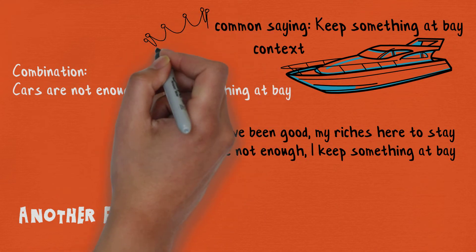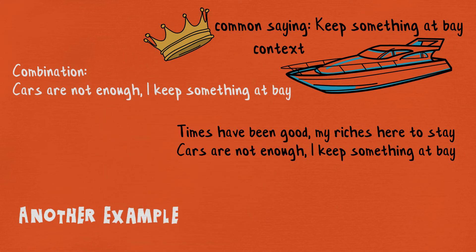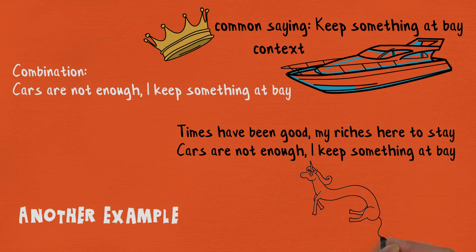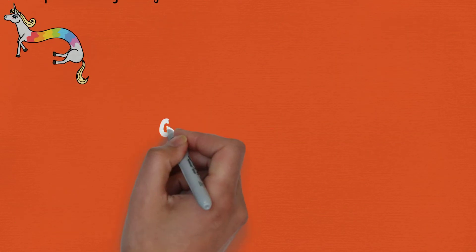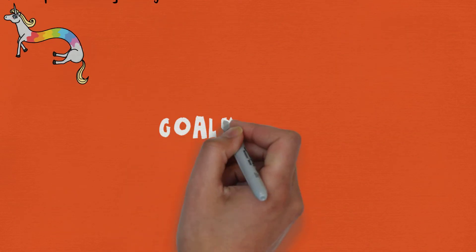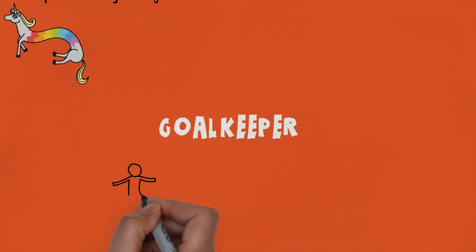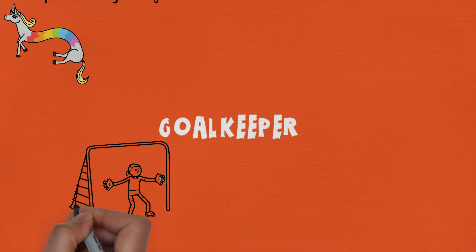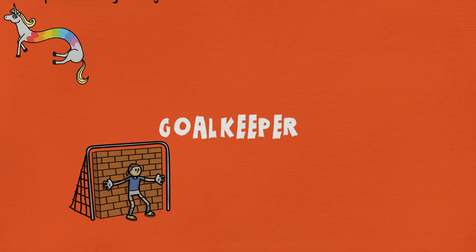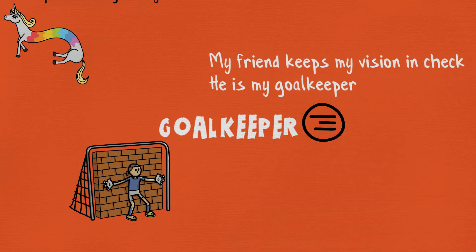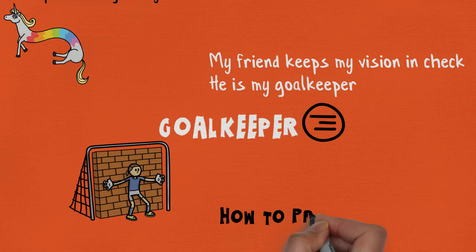Wordplay is not reserved just for common sayings. You can use wordplay on any figure of speech, as long as you can convey an unorthodox meaning to it via creative context. For example, the word 'goalkeeper.' The literal word is a sports term used to describe the football player assigned to guard the goal post. However, using creative context you can use the other meaning of the word — for example: 'My friend keeps my vision in check, he is my goalkeeper.'